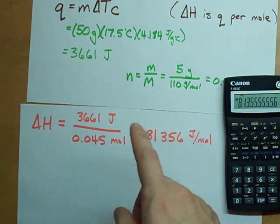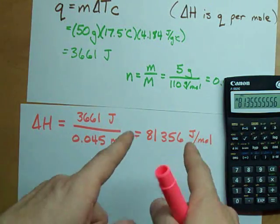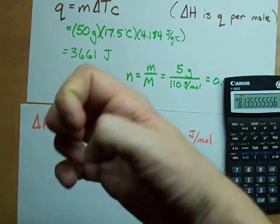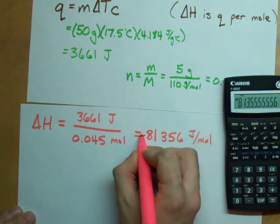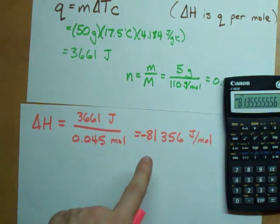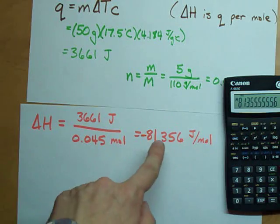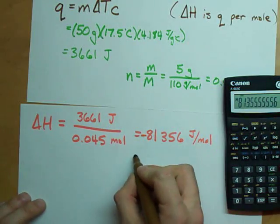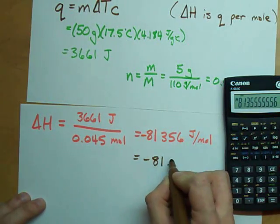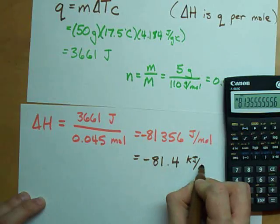One thing I want to point out: heat was released when this happened, which makes it an exothermic reaction. So I'm going to put a negative there, because negative ΔH's are exothermic reactions. Now, I'm going to just convert this to negative 81.4 kilojoules per mole. Makes the numbers a little smaller.